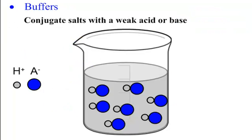That brings us to buffers. What is a buffer? A buffer is a conjugate salt with a weak acid or base. We have buffers all over the place. Our body has a lot of buffers inside of it. Our blood has a buffer. It has carbonic acid, which is a weak acid, with some of the bicarbonate conjugate base in there, and it keeps our blood at a pH of 7.4. What a buffer actually does is it resists change to pH.